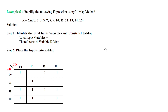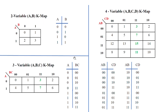Let us see an example. We have to simplify the following expression using the K-Map method. The input is defined by summation of m, meaning it represents the SOP form. The minimum value is 0 and the maximum is 15, which means it is a 4-bit variable. So the total number of input variables is 4, and we have to design using 16 cells.